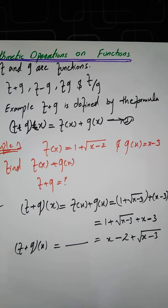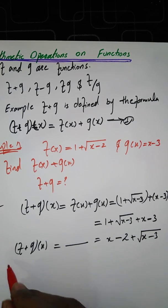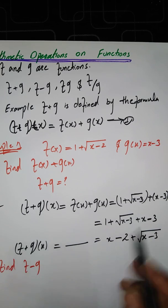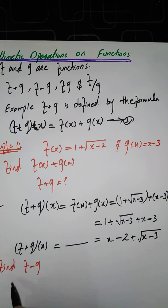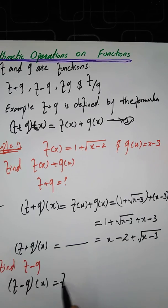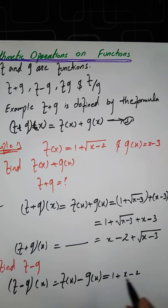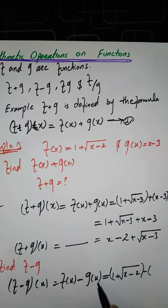Similarly, you can subtract them. Whenever you have to find F minus G, simply replace plus with minus. So (F−G)(x) equals F of x minus G of x, which equals 1 plus square root of (x minus 2) minus (x minus 3).